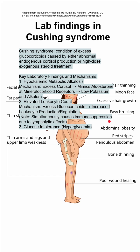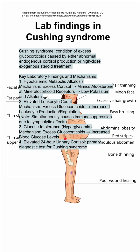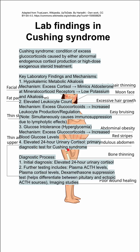Cushing syndrome also causes glucose intolerance and hyperglycemia, as the excess glucocorticoids increase blood glucose levels. There is also an elevated 24-hour urine cortisol level, which is the primary diagnostic test for Cushing syndrome. The initial diagnosis is made with an elevated 24-hour urinary cortisol.